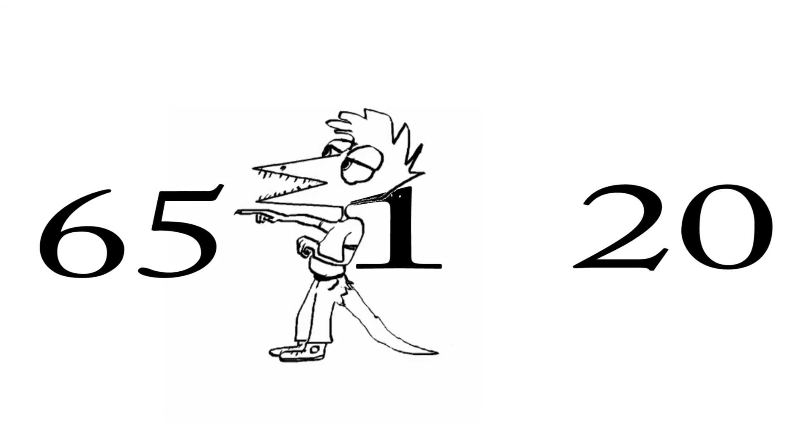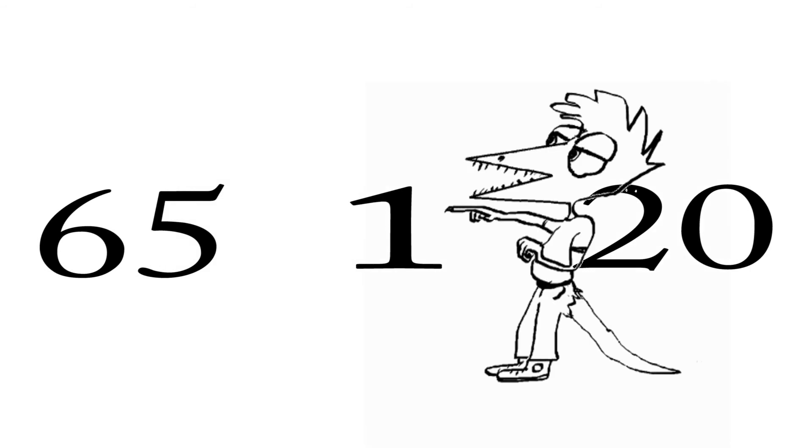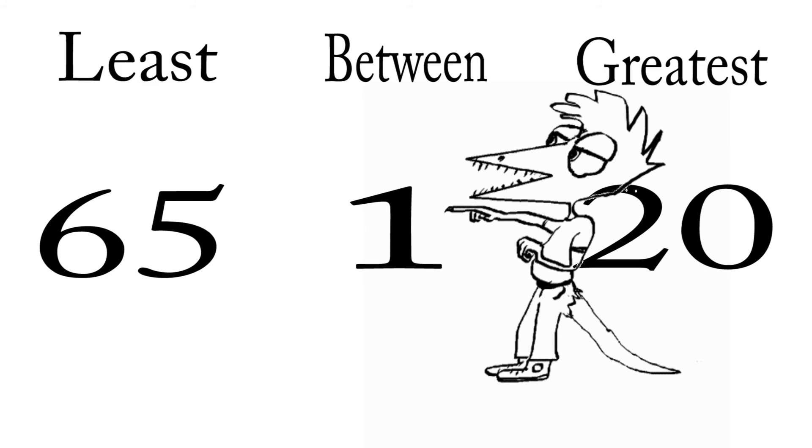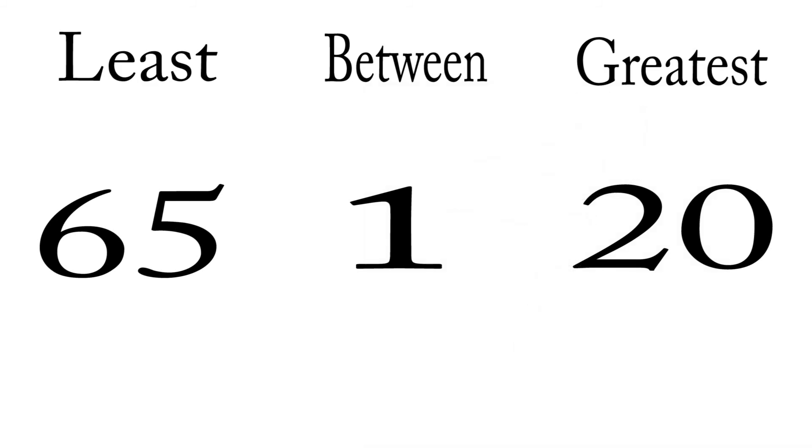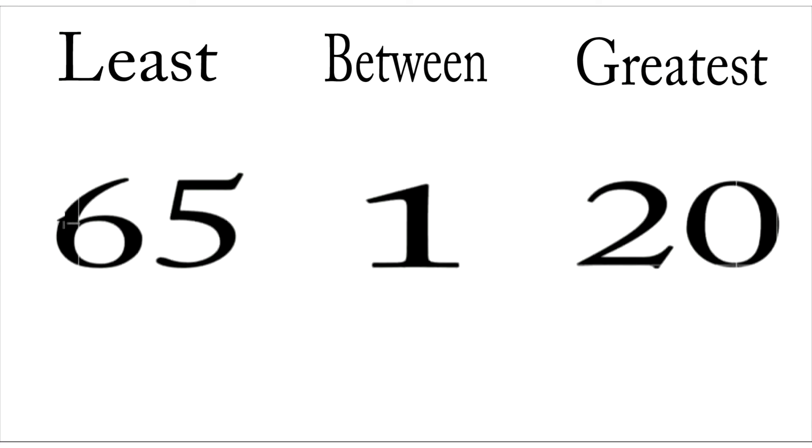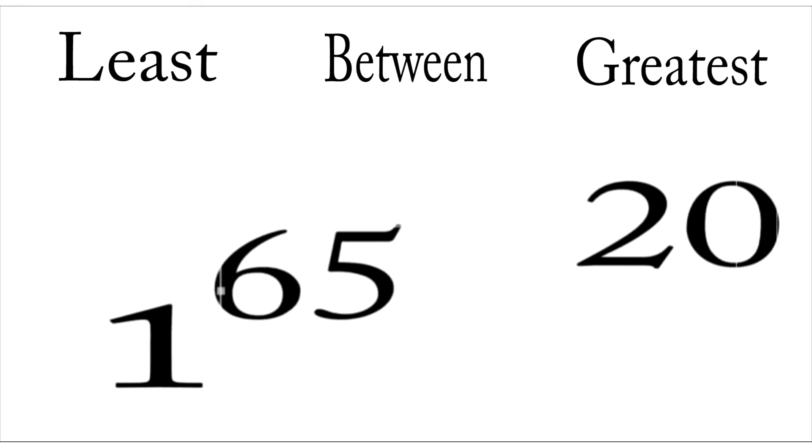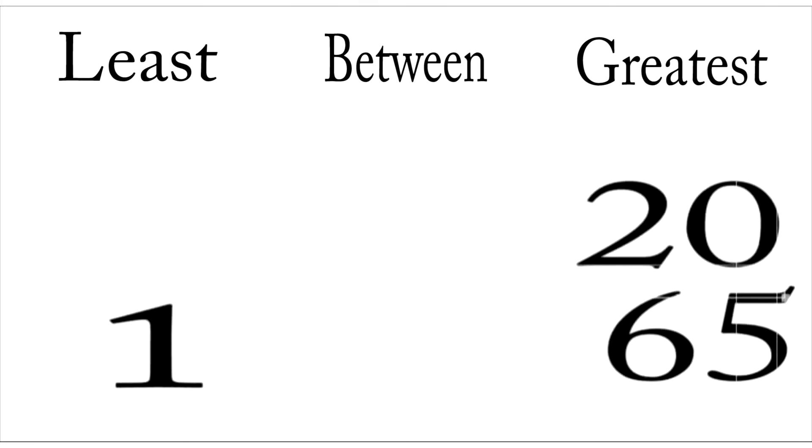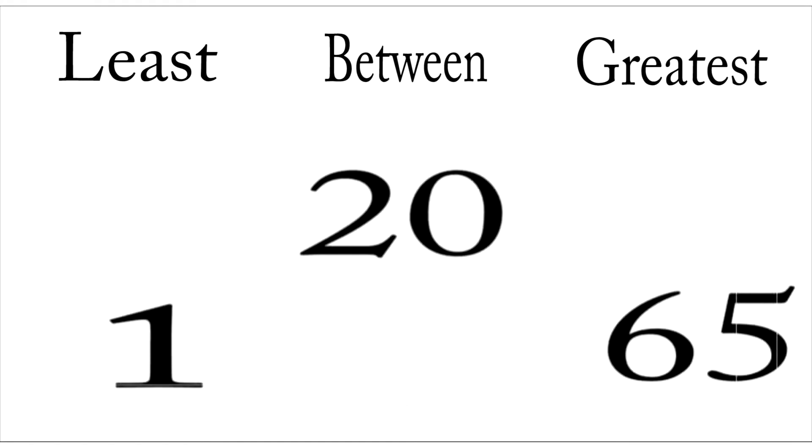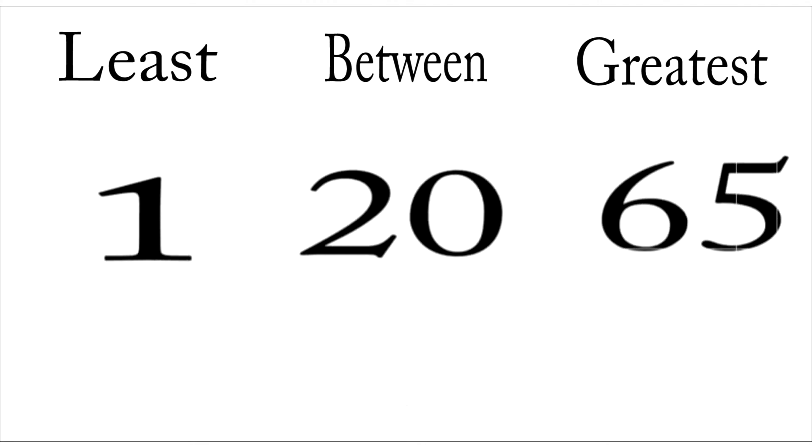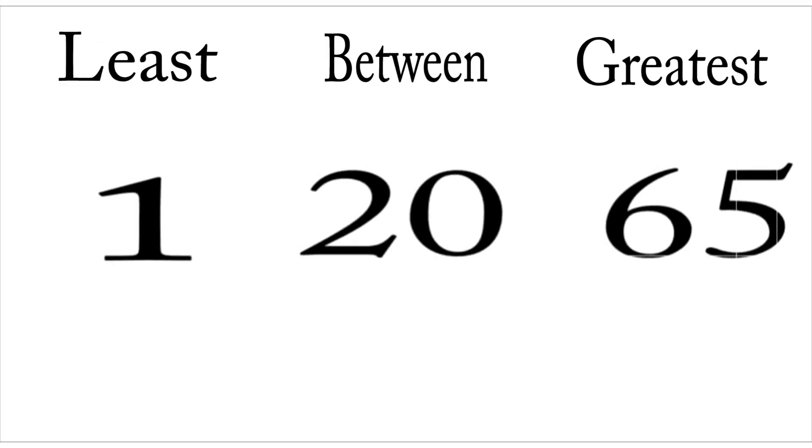Emilio, which of these three numbers is the greatest? 65 is the greatest. Yes, and which is the least? It's one. Emilio, can you order these numbers from least to greatest? I think so. Hold on. Okay, what do you think? Well, I think you've got it.